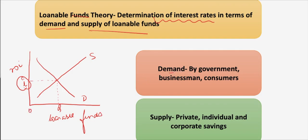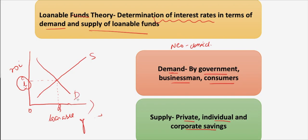The demand for loanable funds comes from the government, businessmen, and consumers. Supply comes from private savings, individual savings, and corporate savings. The demand curve slopes downward showing that less funds are borrowed at a higher rate and more at a lower rate of interest, whereas the opposite is true for supply.